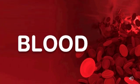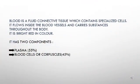So now children, we will study each part of the circulatory system one by one, and we will start with blood. Blood is a fluid connective tissue which contains specialized cells. It flows inside the blood vessels and carries substances throughout the body. It is bright red in color.